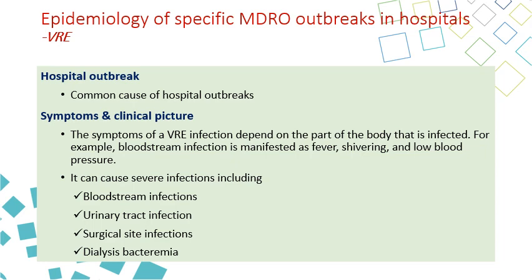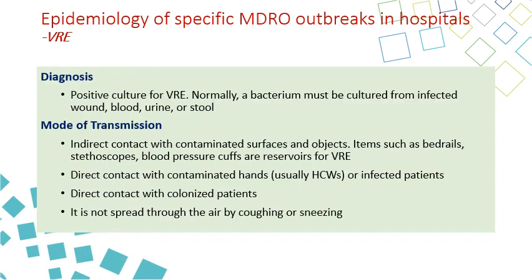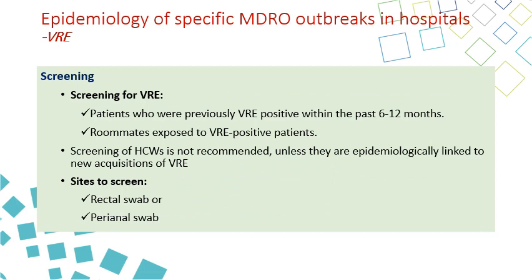VRE is a common cause of hospital outbreaks. Symptoms depend on the site affected — it can cause bloodstream infection, urinary tract infection, surgical site infection, dialysis bacteremia. Diagnosis is by positive culture. Mode of transmission is usually indirect contact by touching surfaces and objects contaminated with VRE, or direct contact by healthcare workers who do not perform hand hygiene, or direct contact with colonized patients. VRE does not spread by air, coughing, or sneezing. Screening is done for previously VRE-positive patients and roommates exposed to VRE-positive cases, using rectal swab and perineal swab specimens.